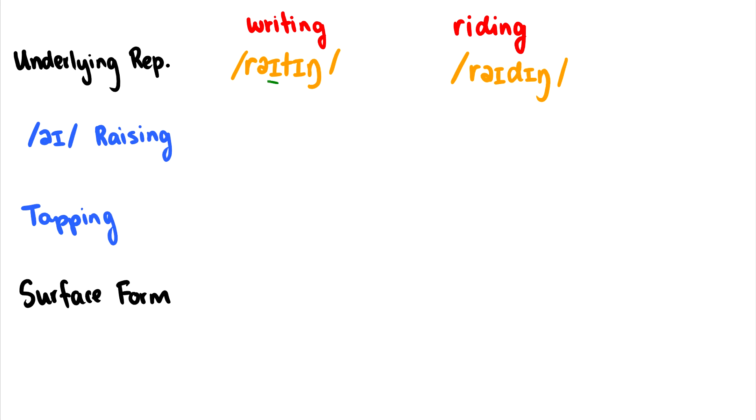These are the completely phonemic representations. In other words, this is before raising, this is before tapping. So we're going to do these rules one at a time. The first one we're going to do is eye raising. What this means is that if eye occurs before a voiceless consonant, it is going to raise. So in the word writing, we can do some raising here, and this would become writing.